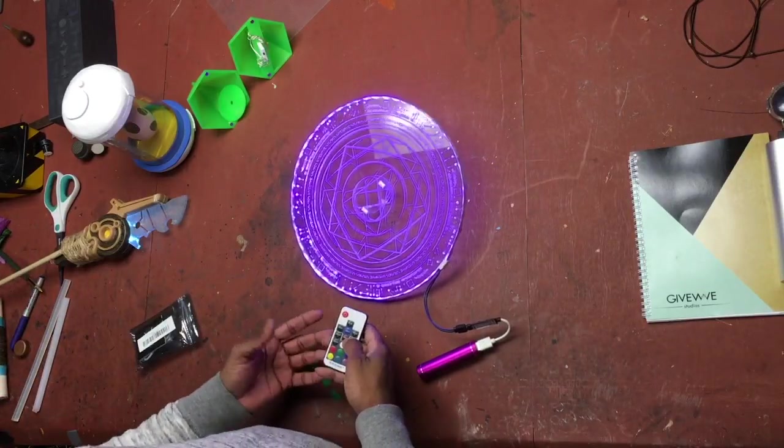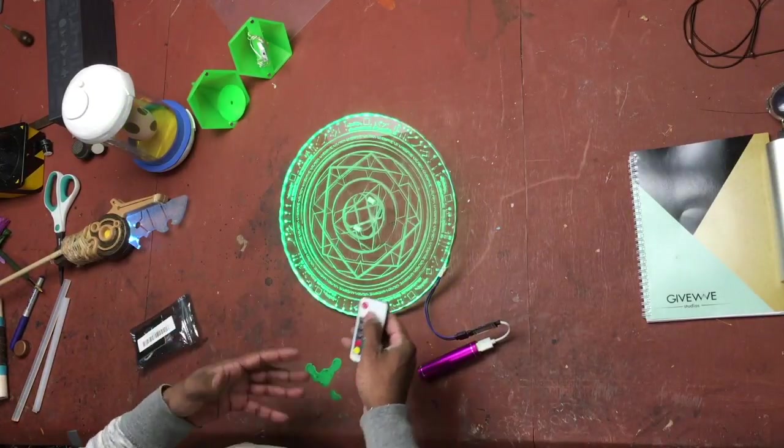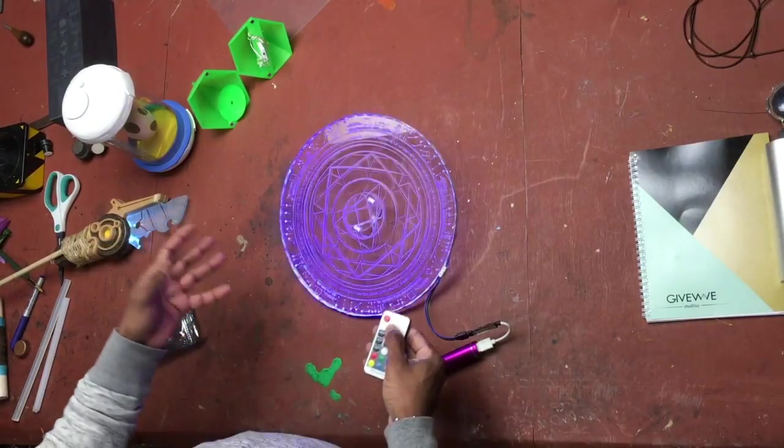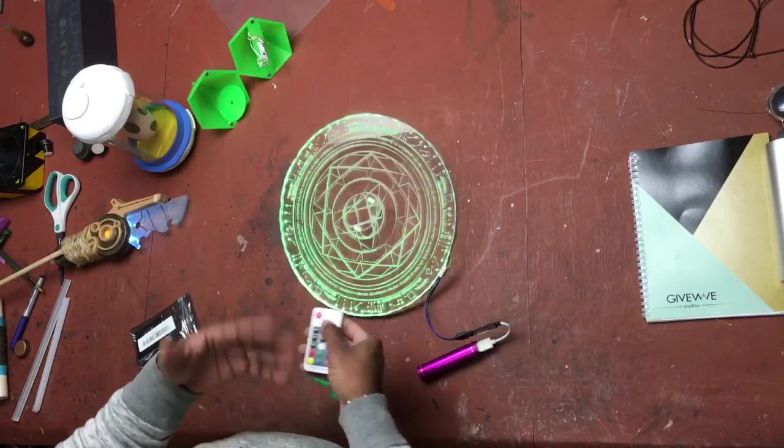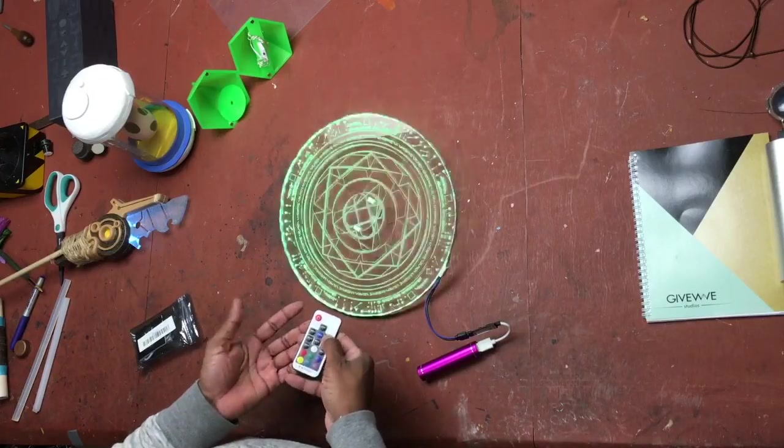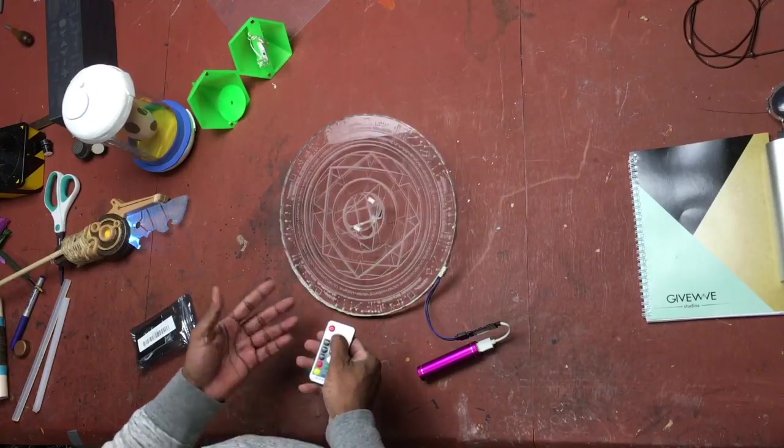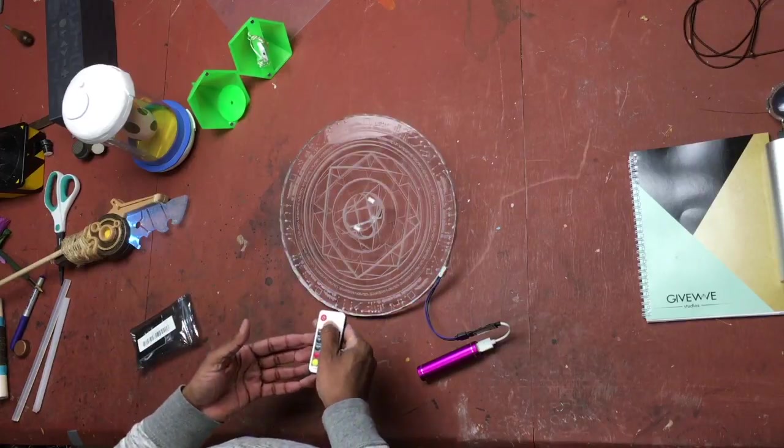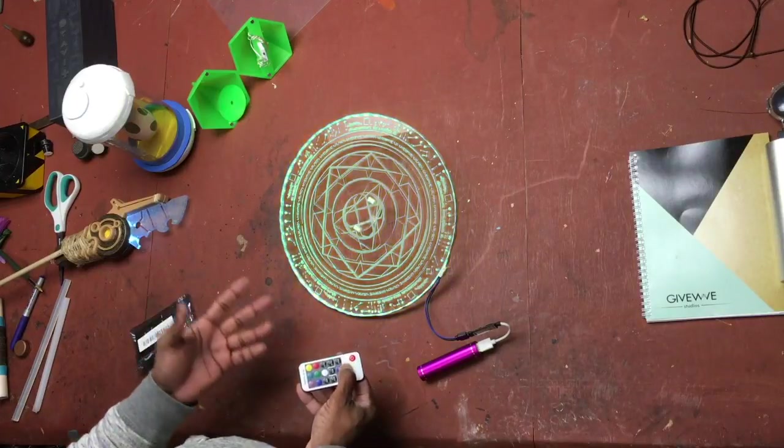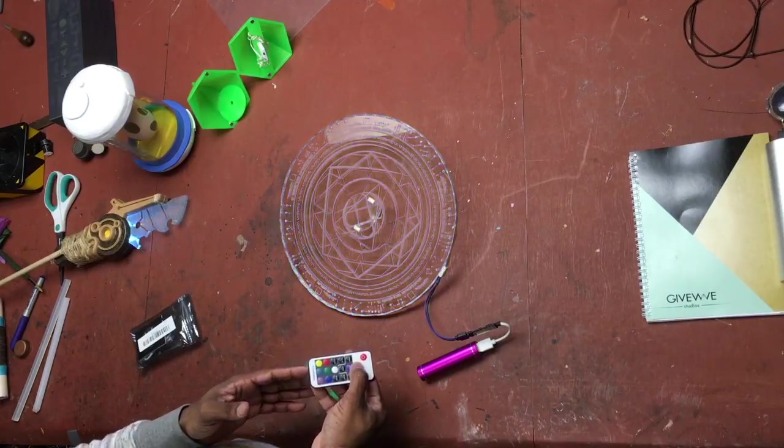It does have a couple of modes, so you can cycle through some of the modes which pretty much just color fade and stuff like that. There's a couple of single color fades, there's multiple colors where it goes through everything, there's a flashing mode, and you can also increase the speed on this - really fast or really slow.